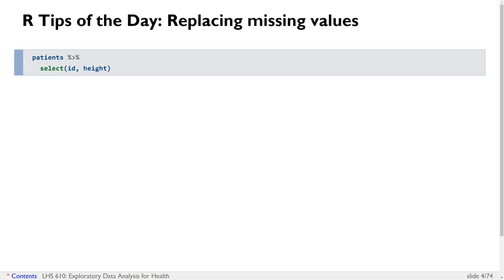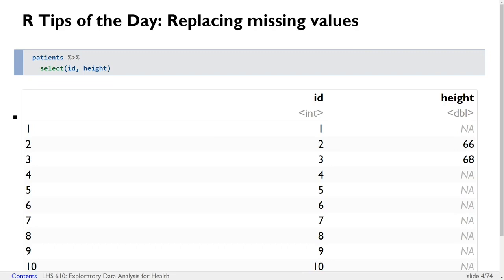In the Namsys08.rdata file, if we were to look at the patients data frame and select ID and height, we would notice that there are two columns, ID and height, and most of the values of height appear to be missing, at least amongst the first 10 values that we see on the screen here.